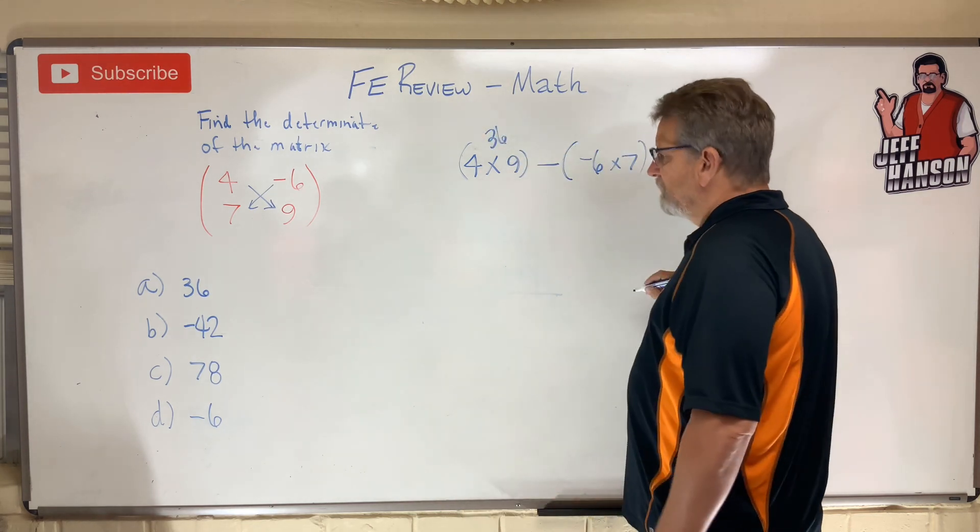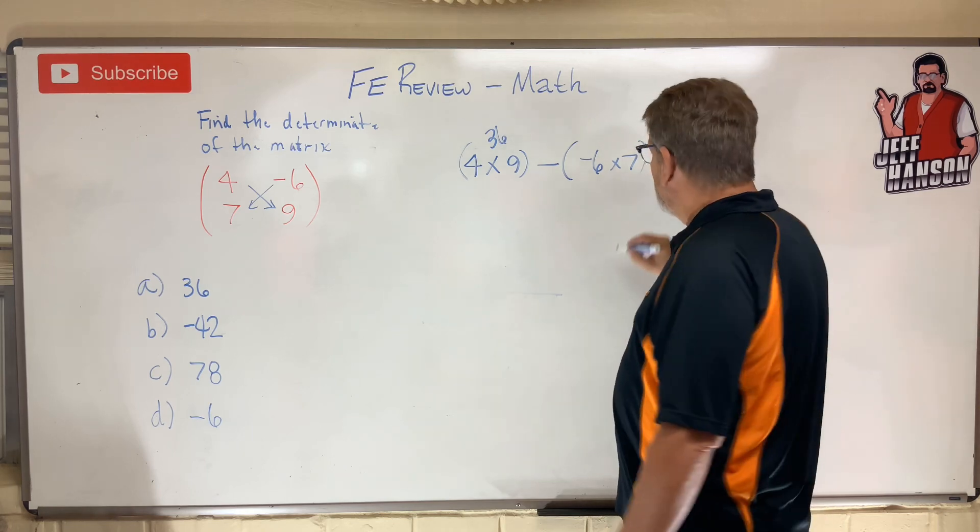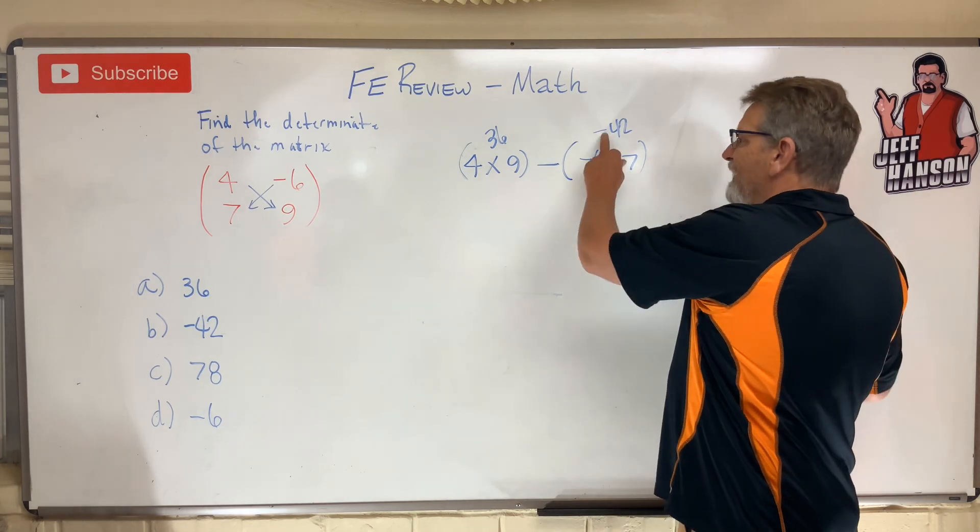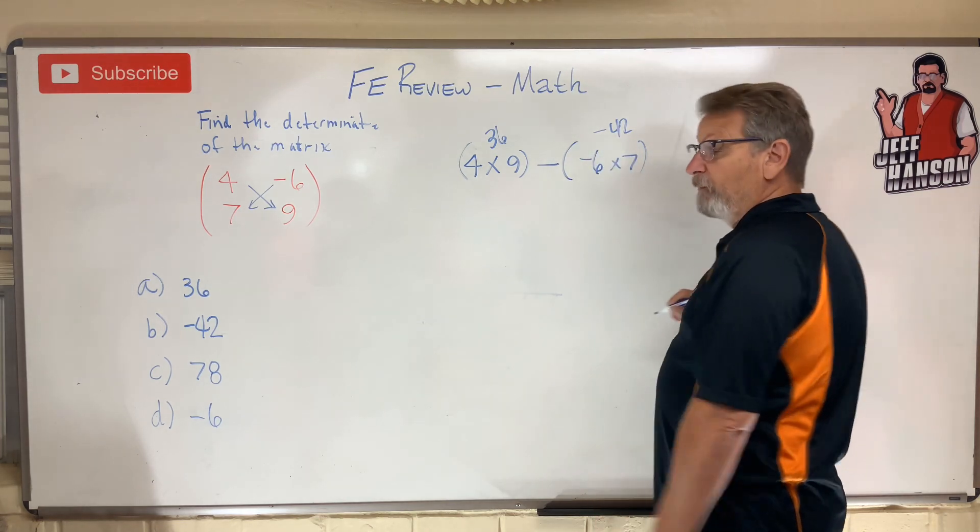That's an answer. Probably not the right one though, right? Negative six times seven is negative 42, okay? Minus a minus turns this guy into a positive.